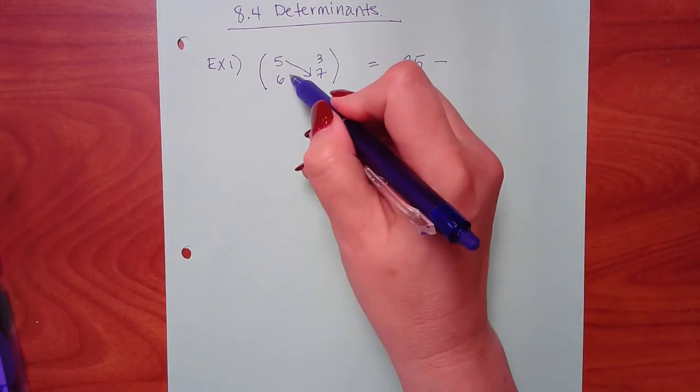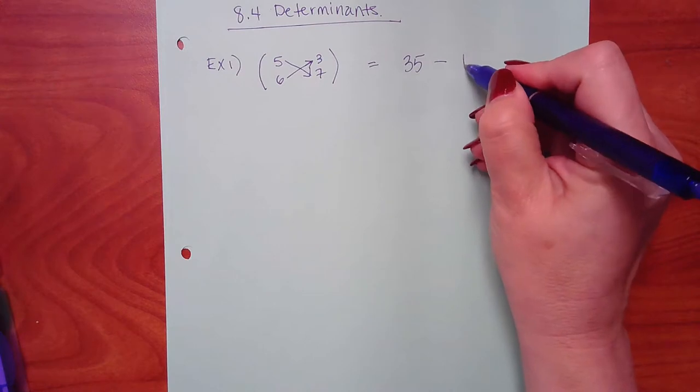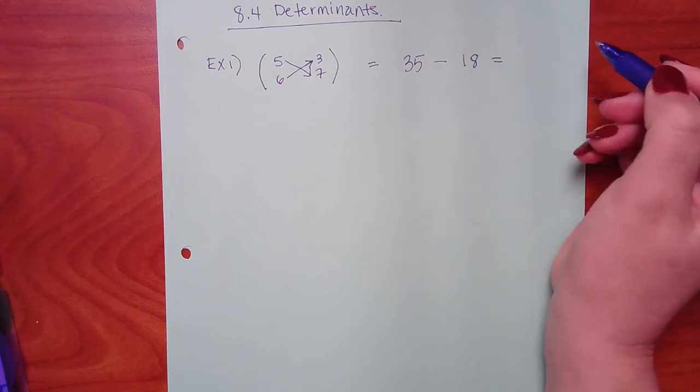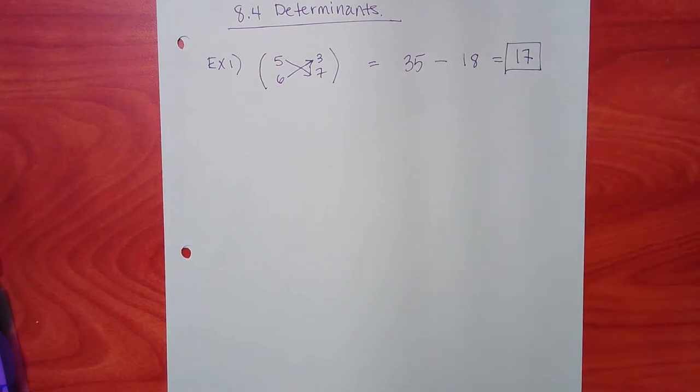Then, when you do the bottom one, when you're going in that direction, you have to put it behind the minus. So that would be 18. And then when I actually compute that, I get 17. So the determinant of this matrix is a value of 17.